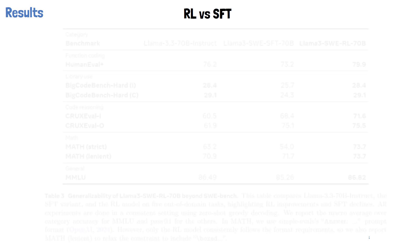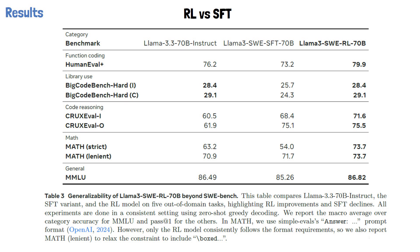Another interesting result compares reinforcement learning with supervised fine-tuning. We can see the performance on multiple out-of-domain tasks for the base model on the left, a model trained on the pull request data using supervised fine-tuning in the middle, and the reinforcement learning model on the right. The results show that the reinforcement learning model consistently outperforms both the base model and the supervised fine-tuning model, even on tasks that were never part of the reinforcement learning training data. This reinforces the idea that reinforcement learning unlocks general reasoning skills rather than just memorizing the training examples.